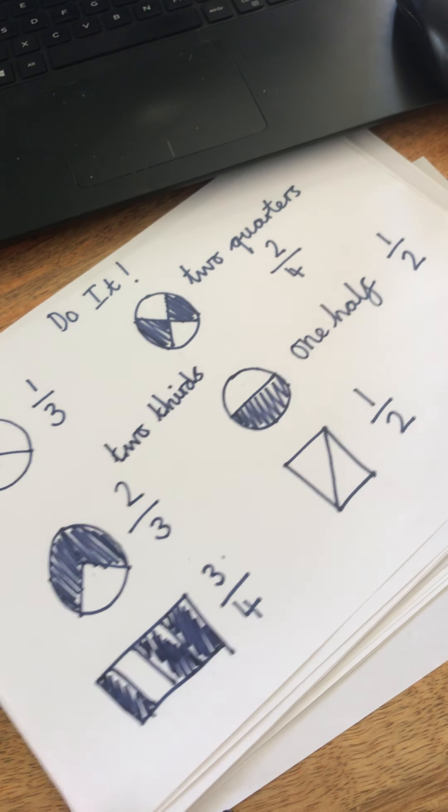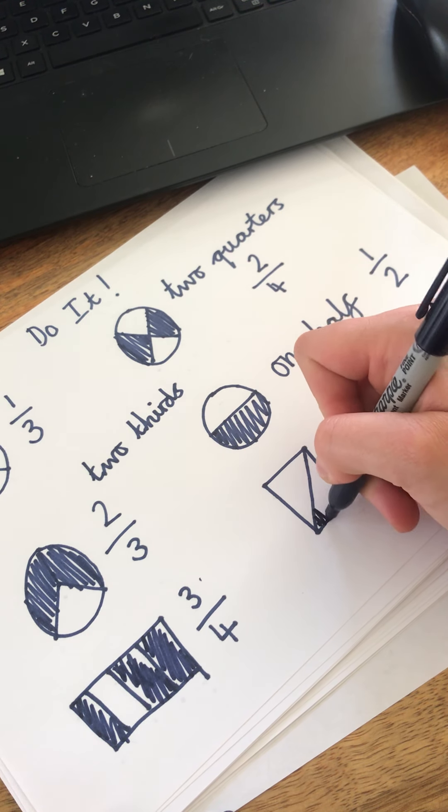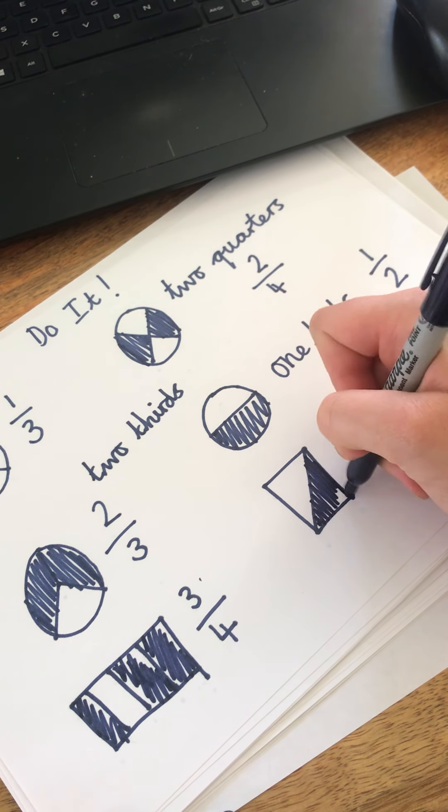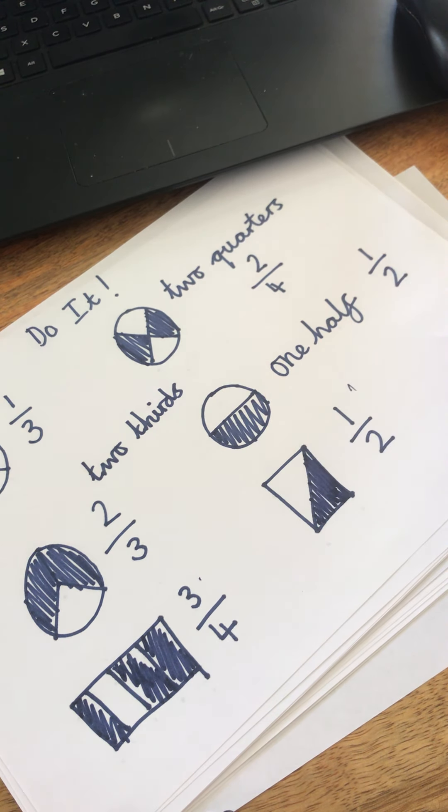Here's another example of how it can look in a different way. This is asking me to colour in a half. I'm going to colour in half the shape. One part has been coloured in and there are two equal parts all together.